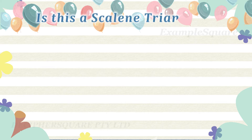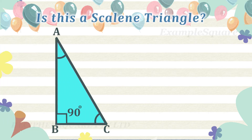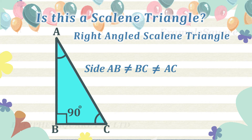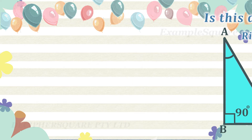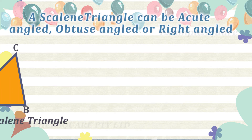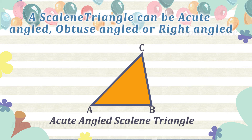Is this a scalene triangle? Yes, this is a scalene triangle. This is a special type of scalene triangle as none of the three sides are equal and also one of its angles is a right angle, that is a 90-degree angle. A scalene triangle can be acute angled, obtuse angled, or right angled.